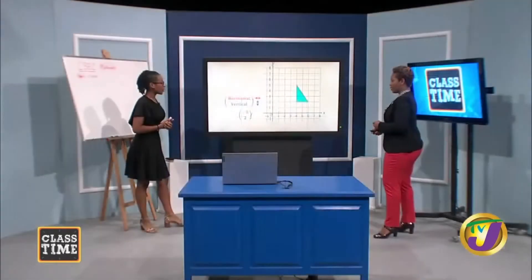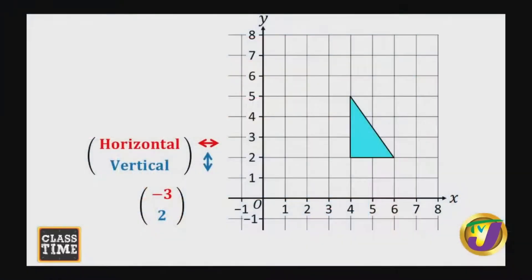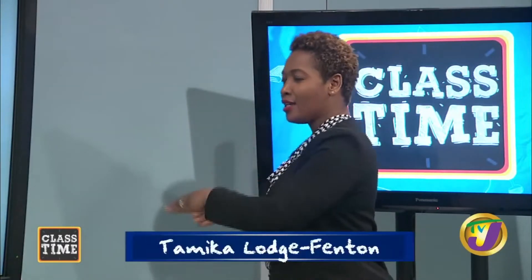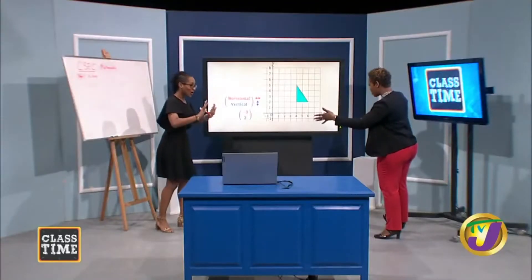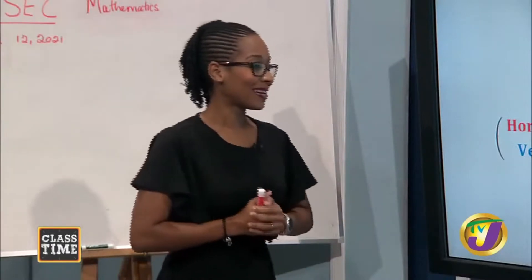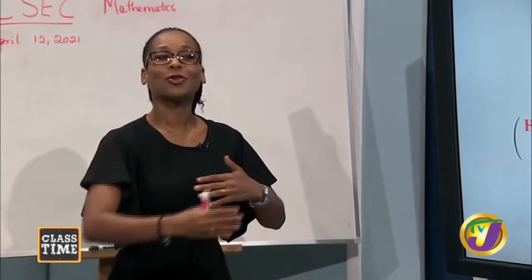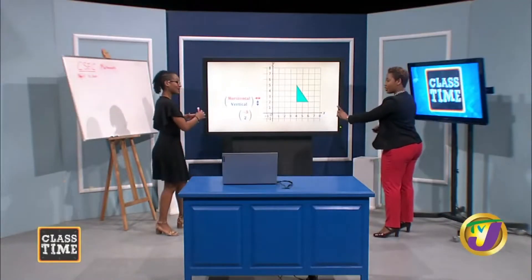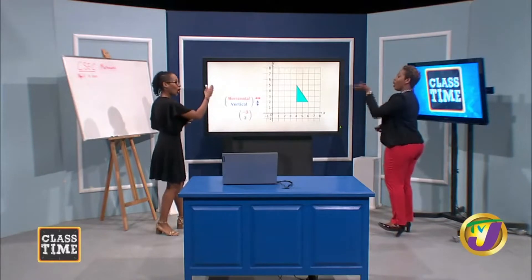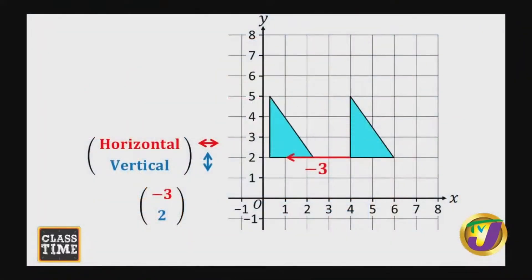Here we have a negative value — negative 3 and positive 2. All the translation vectors we've looked at so far had positive values for horizontal movement and we continuously moved to the right. So this negative means we're clearly moving in the opposite direction — to the left. The vertical movement is still positive, so we're moving upward. So three units to the left parallel to the x-axis, and two units upward parallel to the y-axis.